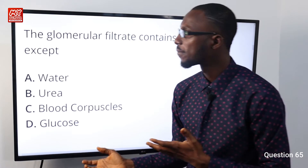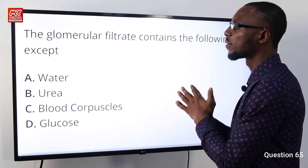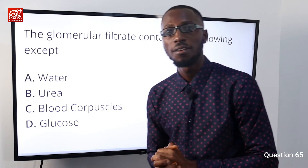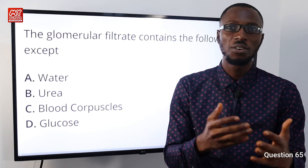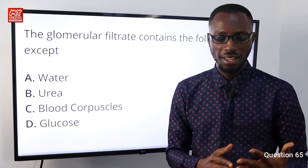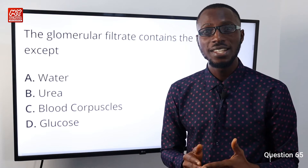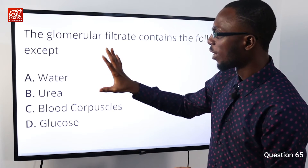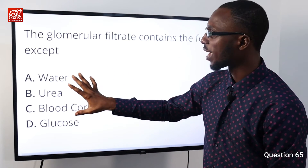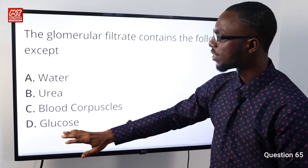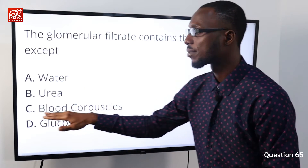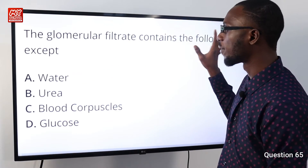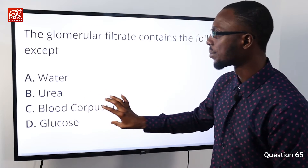Question number 65: The glomerular filtrate contains the following except what? The glomerular filtrate contains water, glucose, amino acids, salt, and urea. Going through our options, it contains water, urea, and glucose, but it does not contain any blood cells. So option C is correct — the glomerular filtrate contains the following except blood cells.